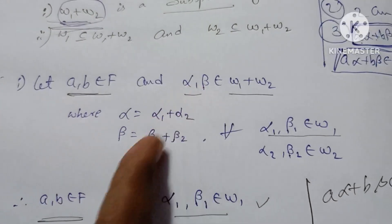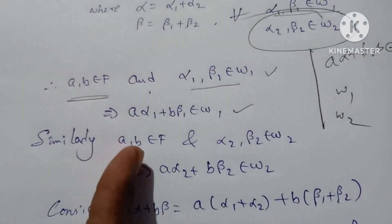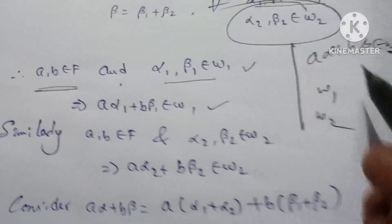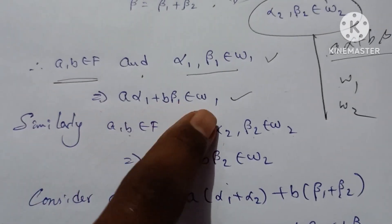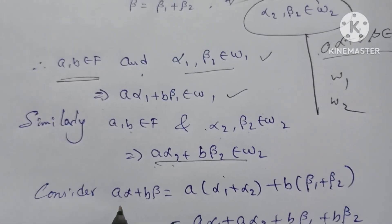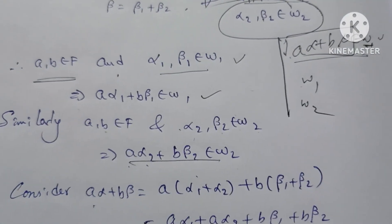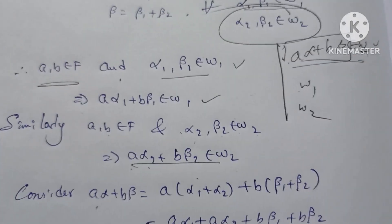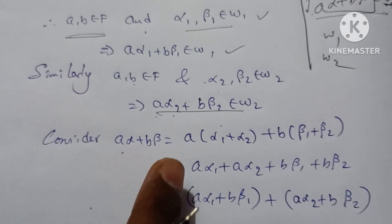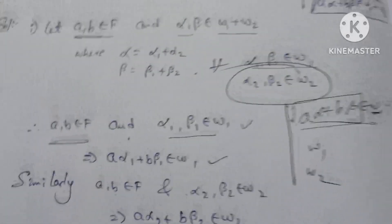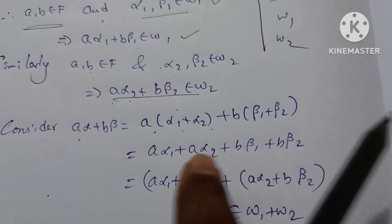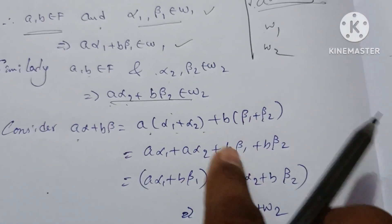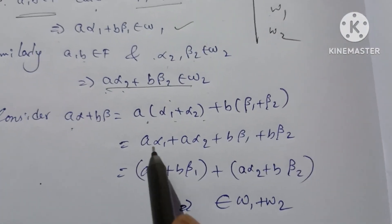This is the condition: alpha2, beta2, a, b belong to F, and alpha2 and beta2 belong to W2. By the same condition, a·alpha2 plus b·beta2 belongs to W2. Now, a·alpha plus b·beta equals a·(alpha1 plus alpha2) plus b·(beta1 plus beta2).